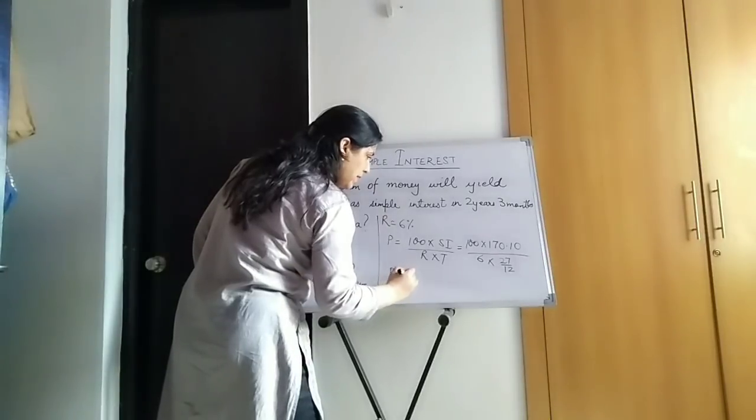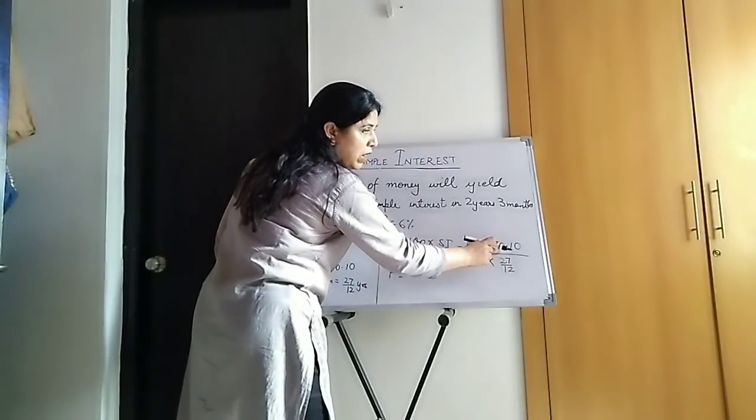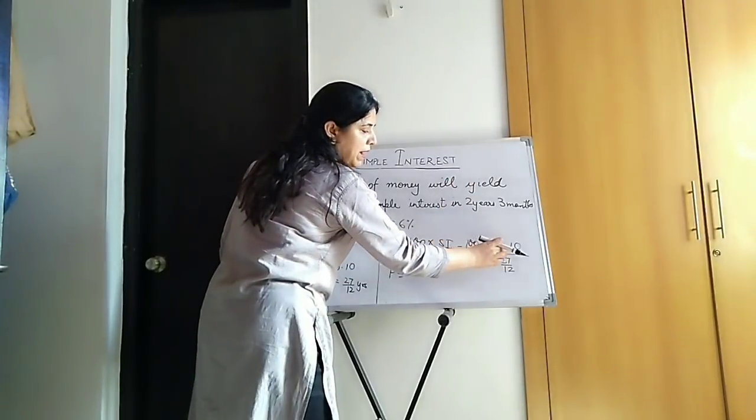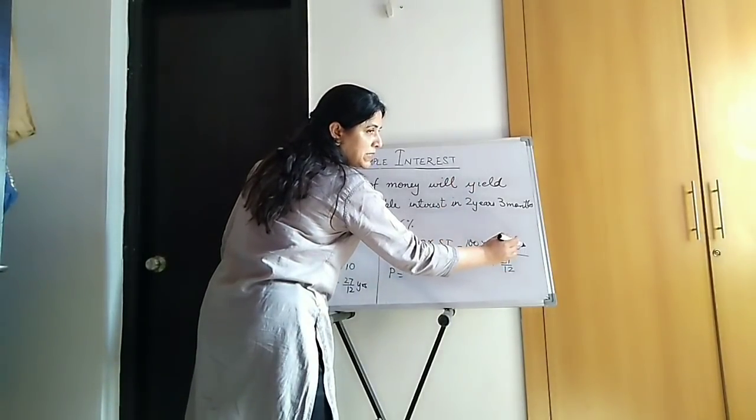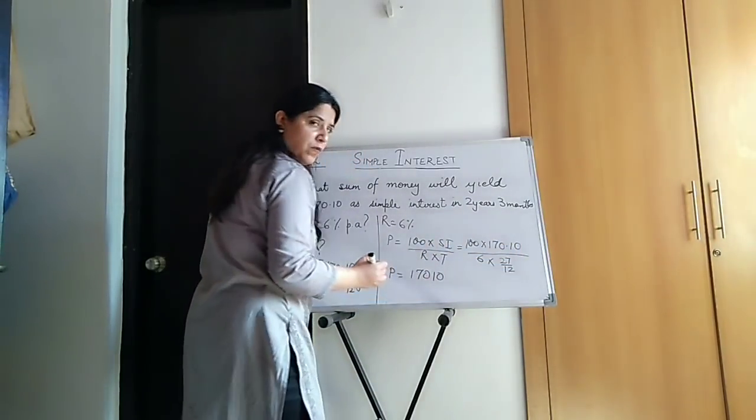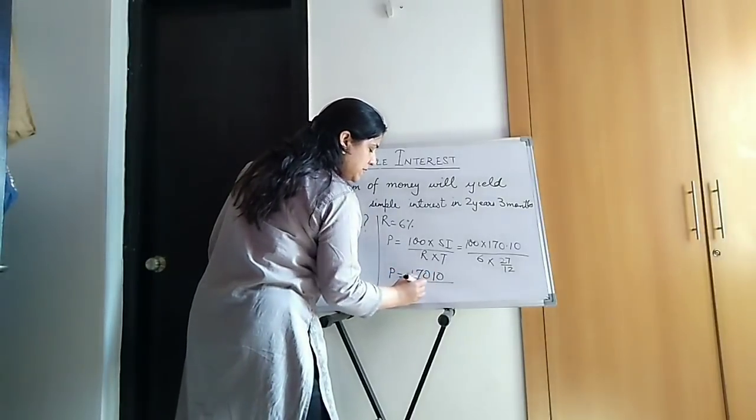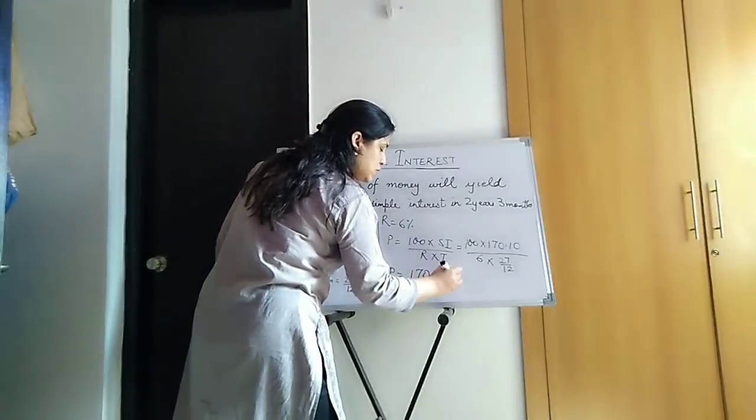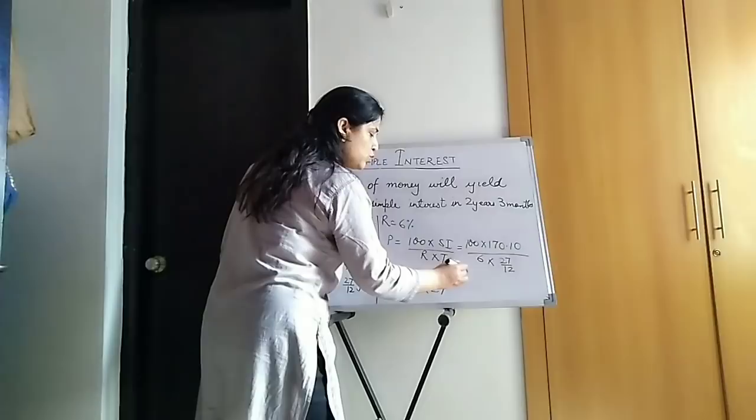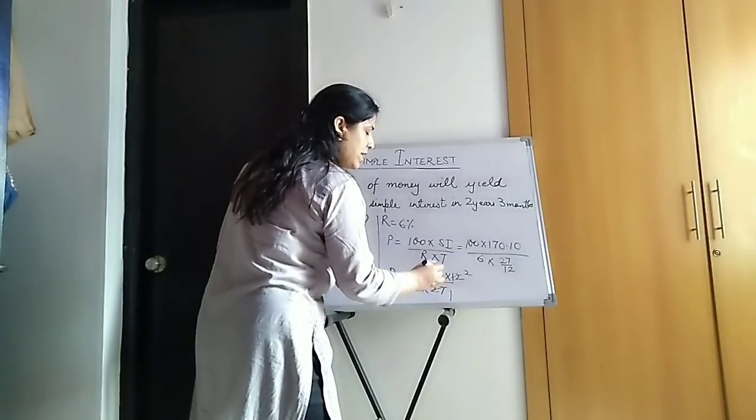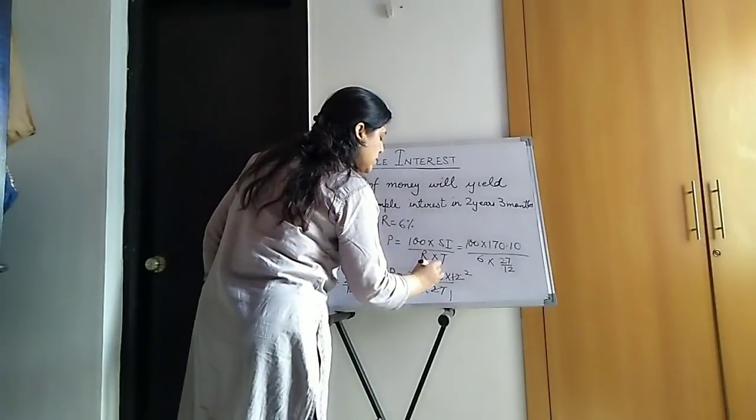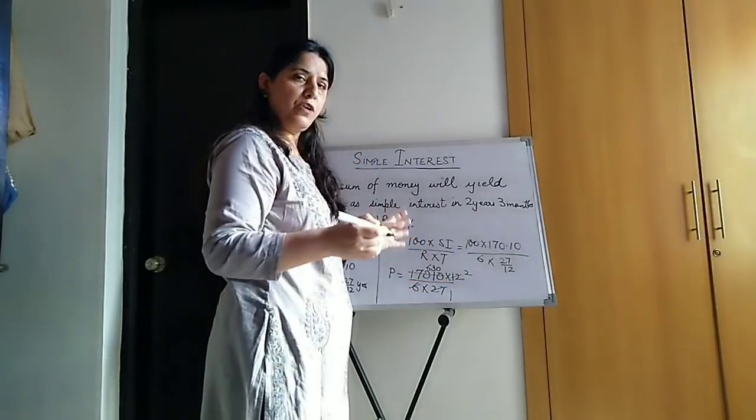So how will you write? Principle is 100. And you know how to multiply decimals by 10, 100, 1000 and so on. When we are multiplying by 100, the decimal shifts two places to the right. So it becomes 17010 upon 6 into 27 and this 12 comes up. When we cancel this, 6 ones are 6, 6 twos are 12 and 27, it goes 630 times.